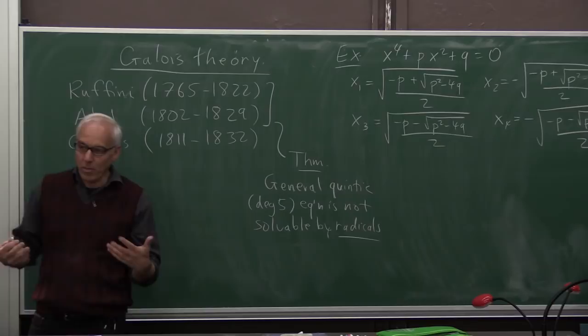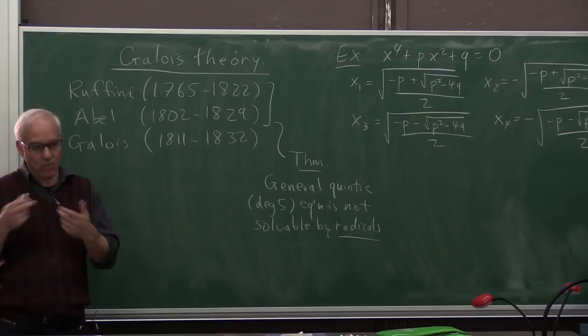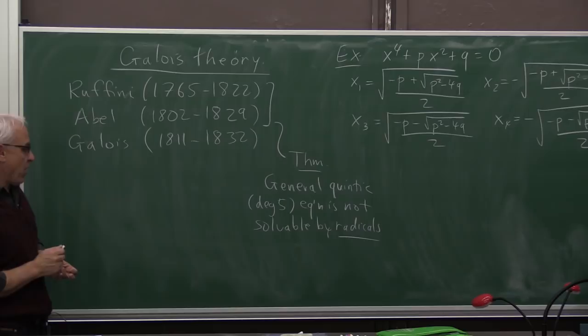All right, what does that mean? Well, it means that there's no formula involving analogs of square roots, not just square roots, but cube roots or higher roots. For a fifth-degree polynomial, you'd expect there to be fifth roots. But you cannot write down a formula for a general quintic equation involving lots of fifth roots, even if they're nested inside each other and different kinds of radicals are involved.